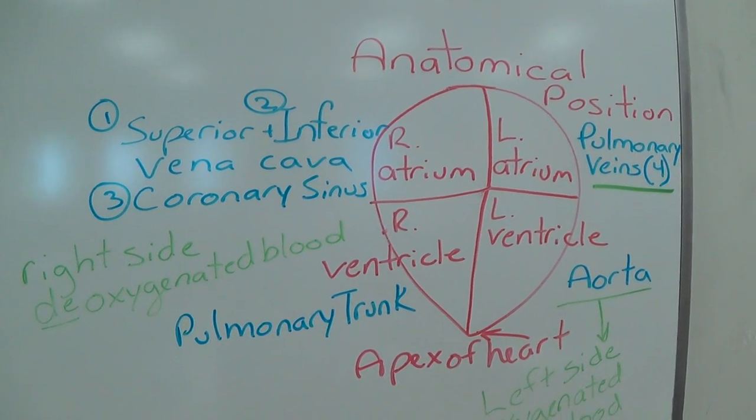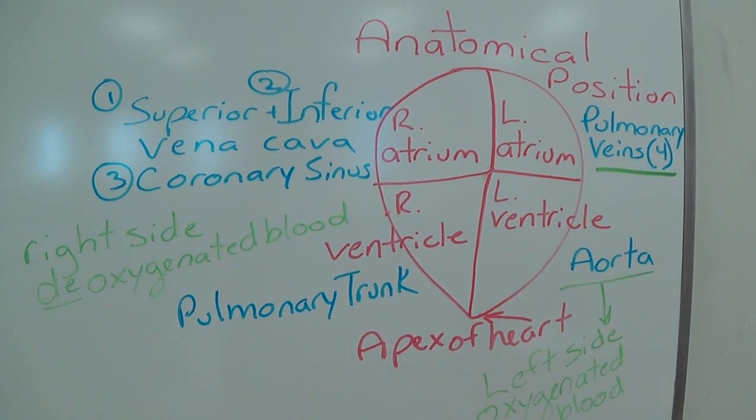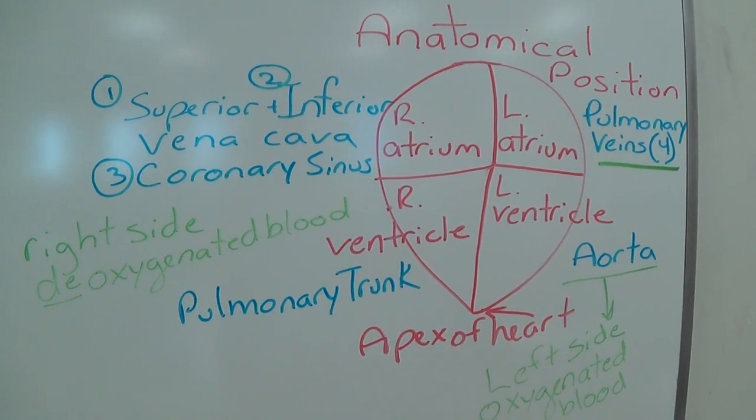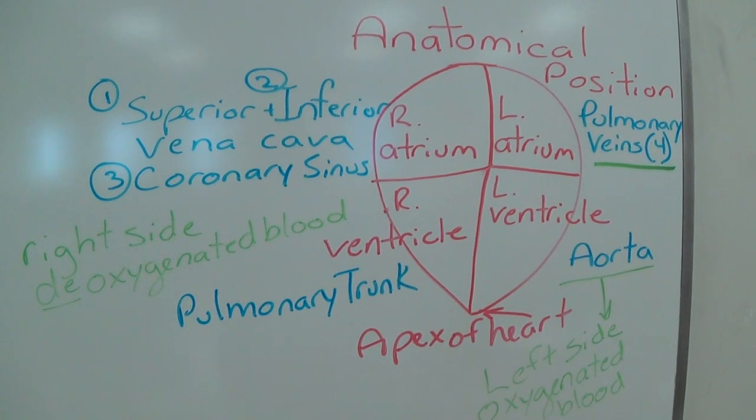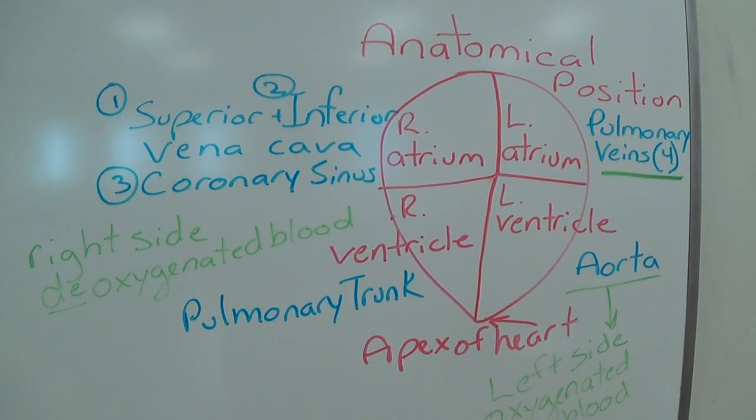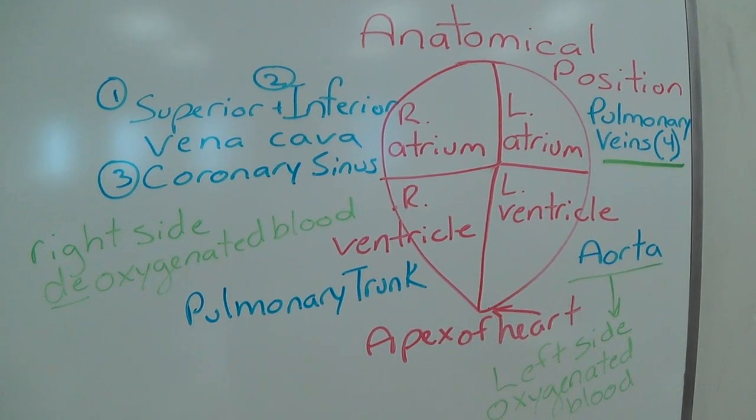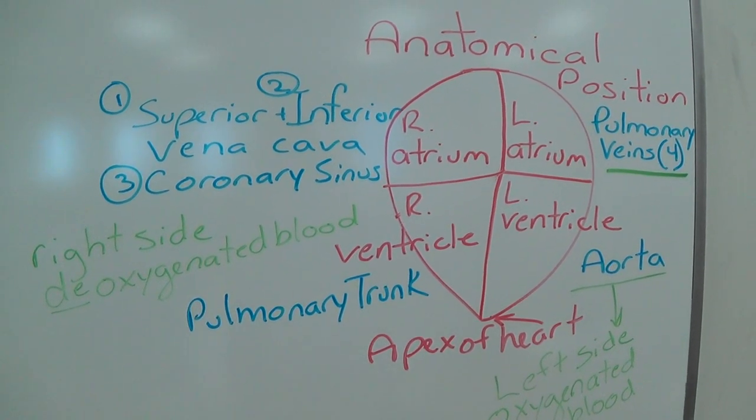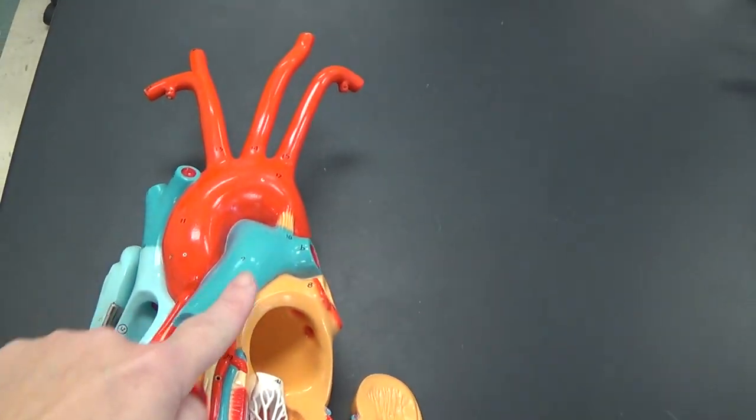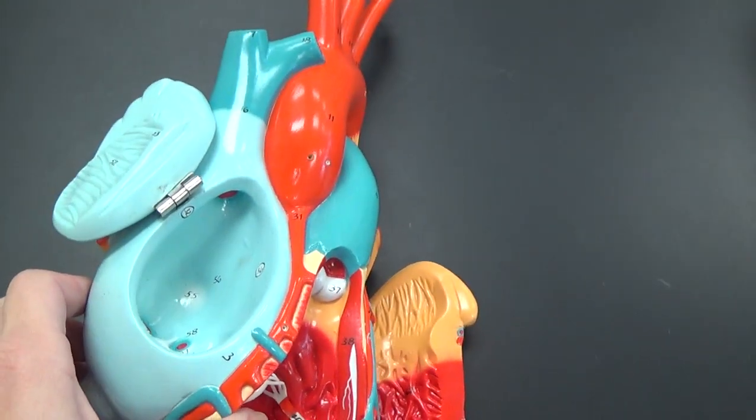On the right side, we have deoxygenated blood. It is coming back from the systemic circuit of the body. It includes blood from the superior vena cava, inferior vena cava, and coronary sinus. Blood will then be pushed from the right atrium to the right ventricle. When the right ventricle contracts, blood will be pushed through that pulmonary trunk. The pulmonary trunk, which we saw here.